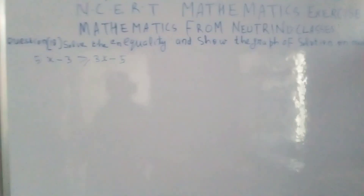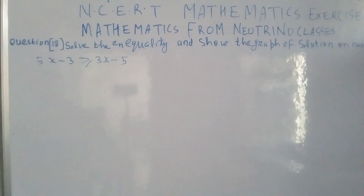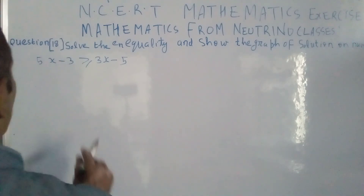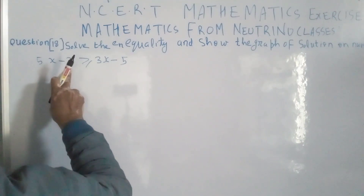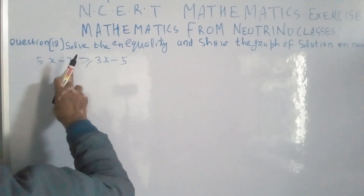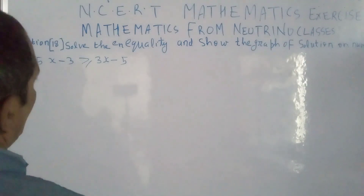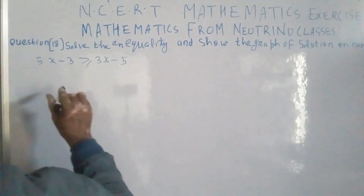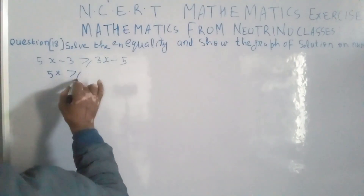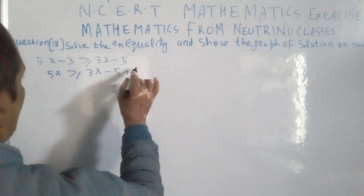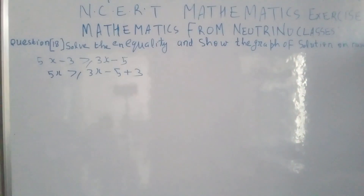To solve this inequality, we keep all x terms on the left side and constant terms on the right side. So we eliminate minus 3 from the left side — when we move it to the right side, it becomes plus 3. There is no change in the inequality sign because we can perform any operation on an inequality except division or multiplication by a negative number.